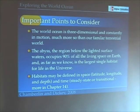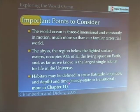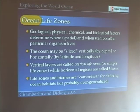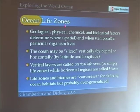So let's remember: habitats in the ocean can be defined in space — latitude, longitude, and depth — and in time, whether they occur in a steady-state manner or as more transitional conditions. The geological, physical, chemical, and biological factors that determine where and when an organism lives determine what are called ocean life zones.